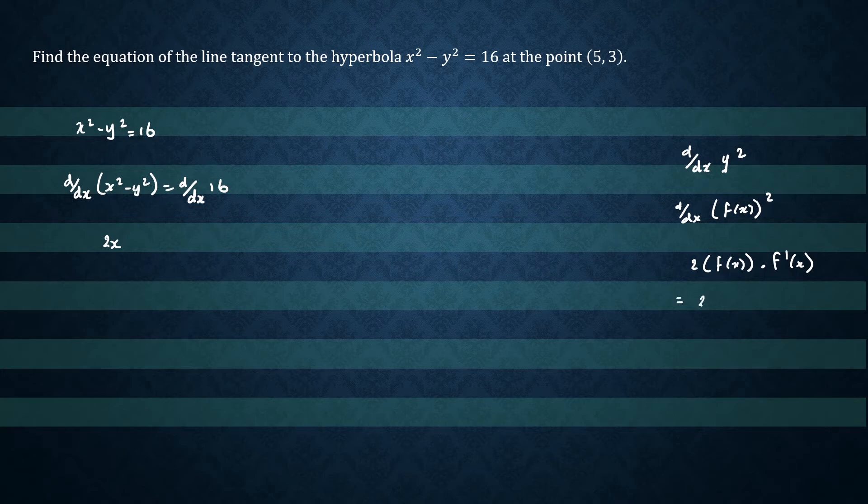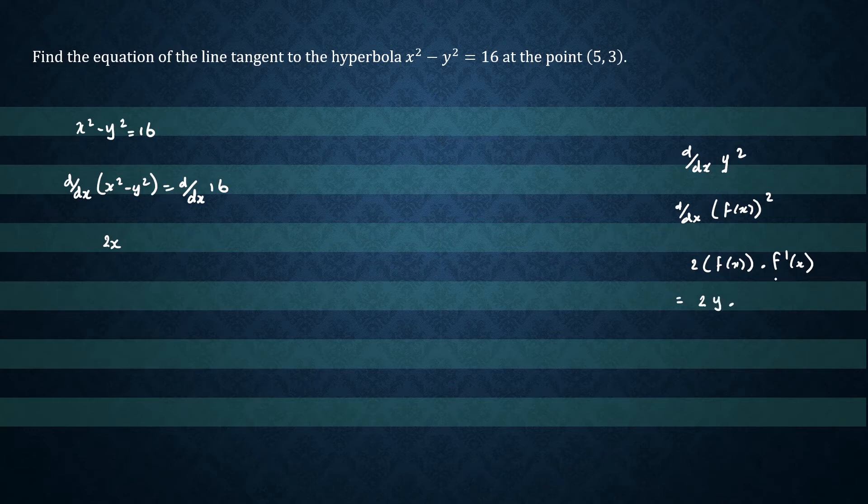This would be 2 times y, which is f(x). So that would be 2y times the derivative of f(x), which is y, which would become just dy/dx.